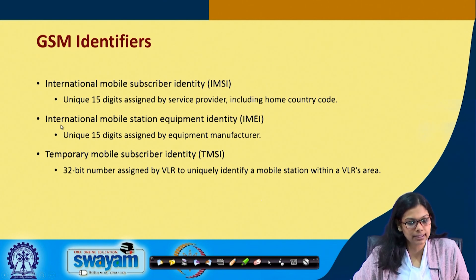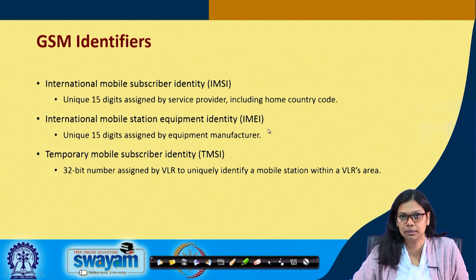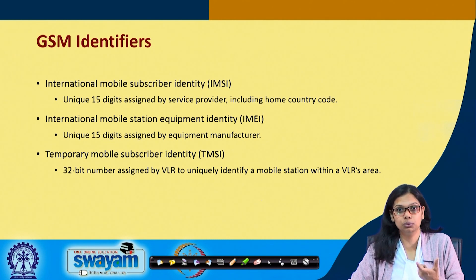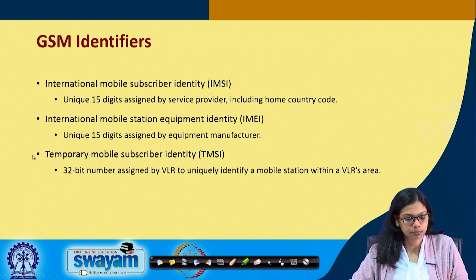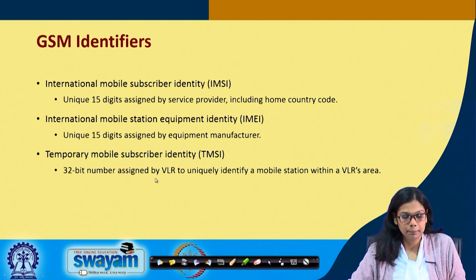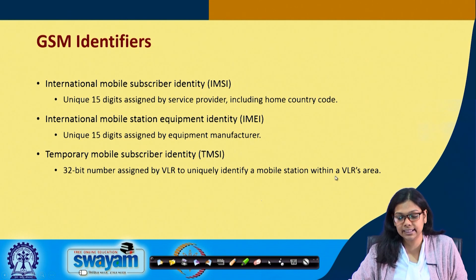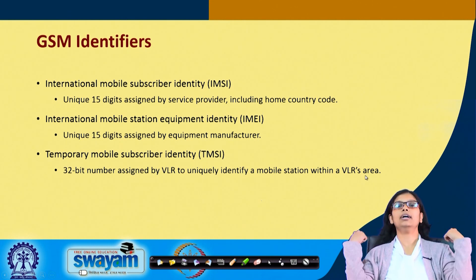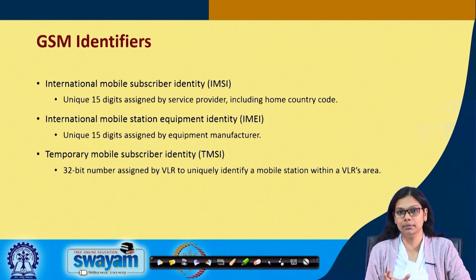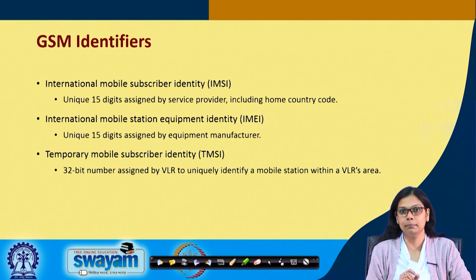Next is the International Mobile Station Equipment Identity, which we know as the IMEI number. This is a unique 15-digit number assigned by the equipment manufacturer when the device is manufactured. There is also a Temporary Mobile Subscriber Identity, which is a 32-bit number assigned by the VLR when you move to another location, to uniquely identify a mobile station within a VLR's region.